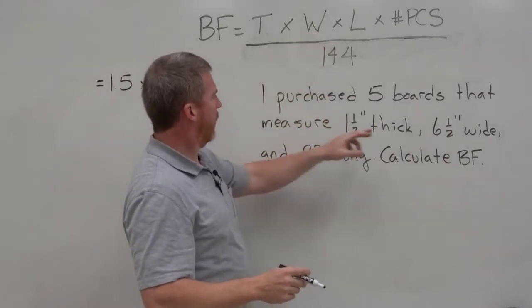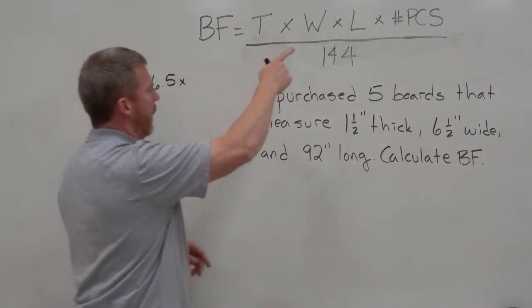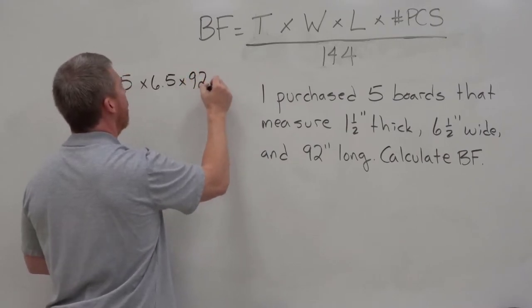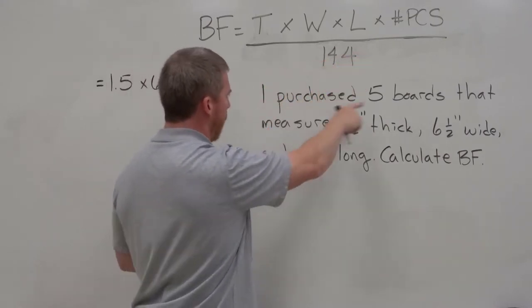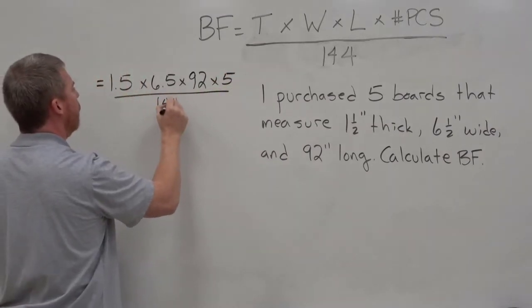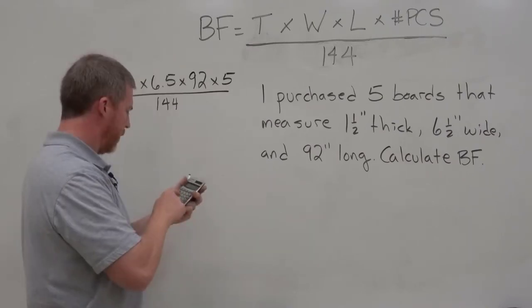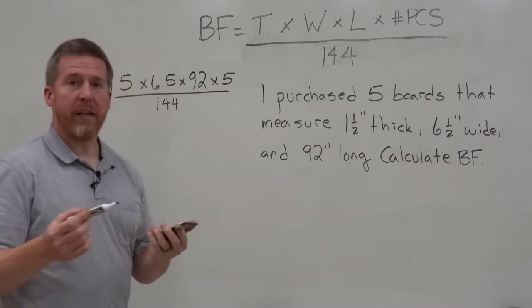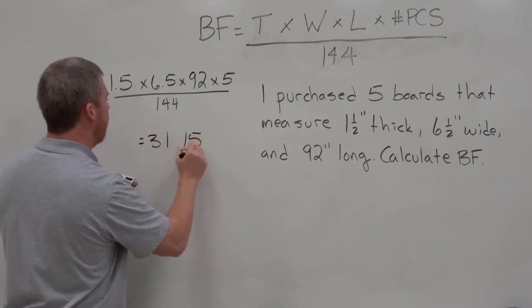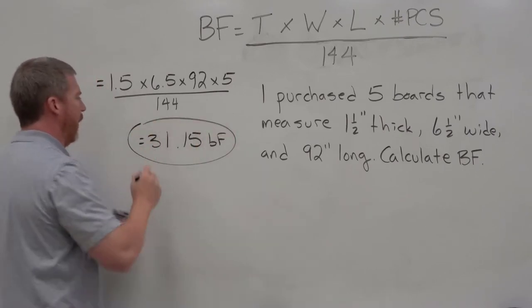I need my width, six and a half wide. There it is. I need my length. You keep reading and 92 inches long. And then how many pieces? That's right in the beginning. Five boards. And divide all that by 144 and chug out the number. And the answer I get is 31.15 board feet. And that would be my answer for that question.